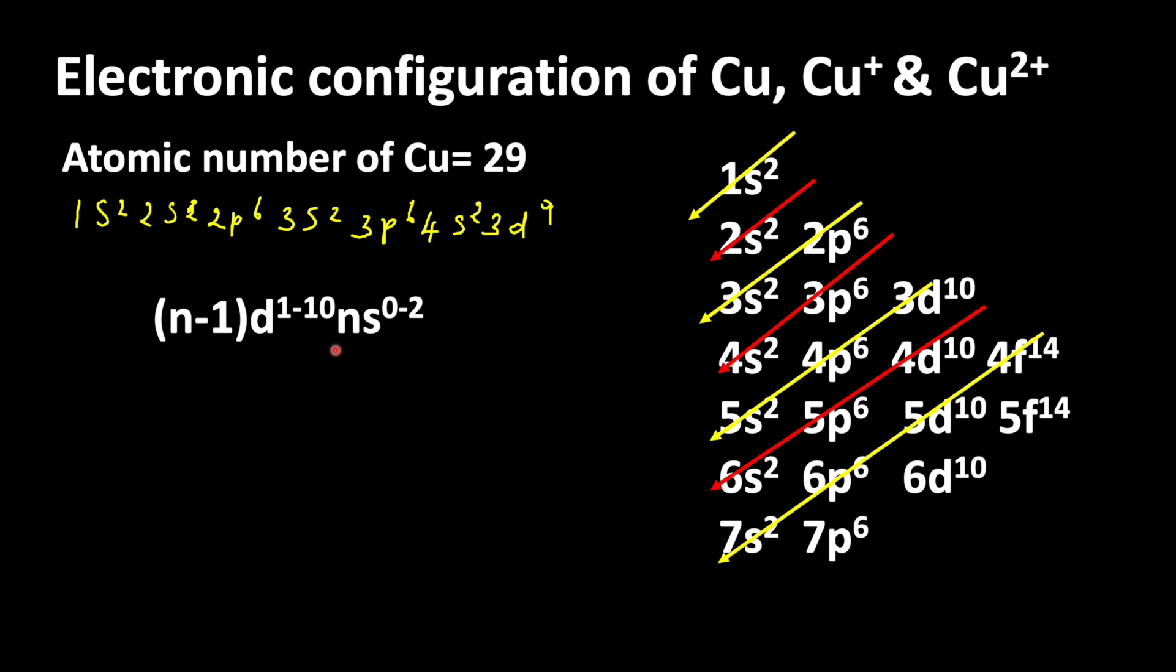Here you can see the general electronic configuration of d-block elements: (n-1)d1-10 ns0-2. First we will write the inner orbital, here 3d orbital, then we will write the 4s orbital. Now the correct electronic configuration is 3d10 4s1. This is the complete electronic configuration of copper.